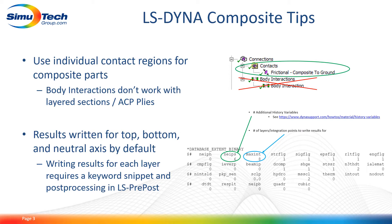There are a couple other things to note when using LS Dyna with composites. First, you'll want to use individual contact regions for all the composite parts — things like a frictional contact. You don't want to use body interactions since those don't work with layered sections or ACP plies, so avoid body interactions for any composite parts.